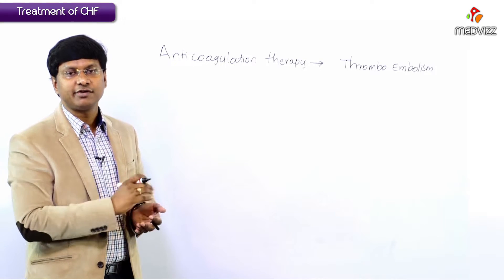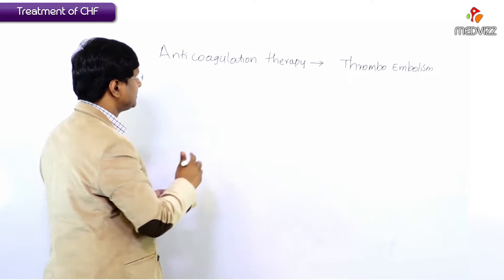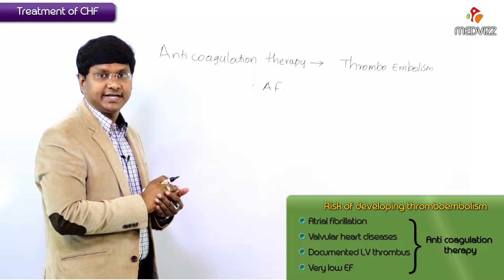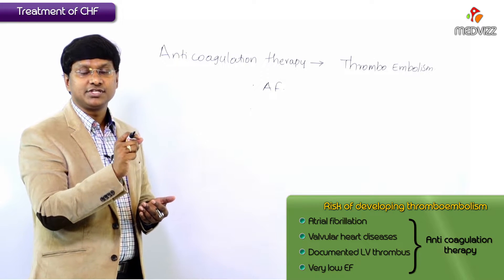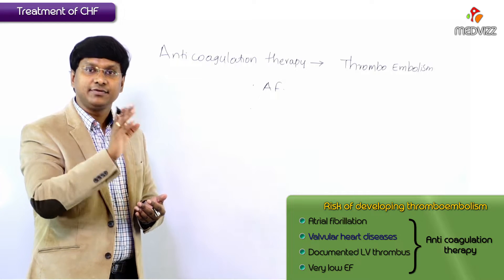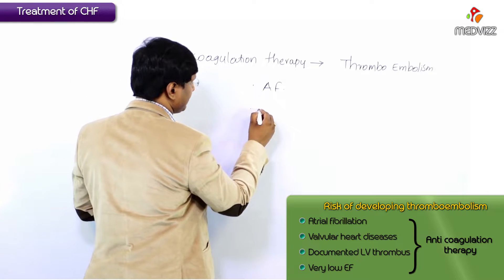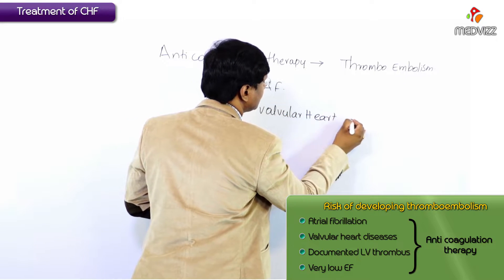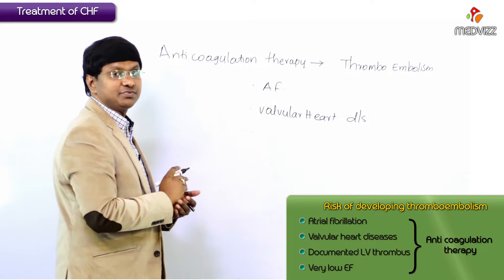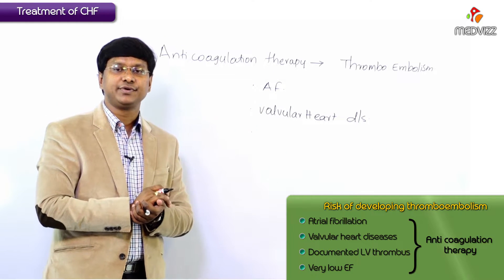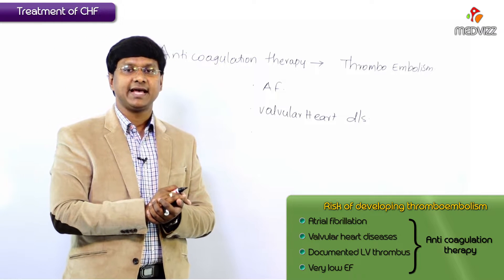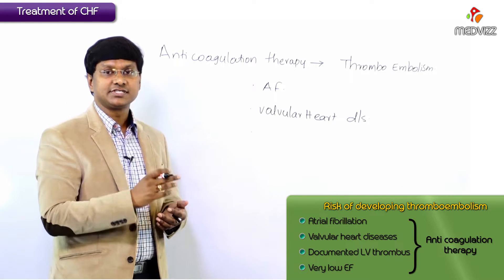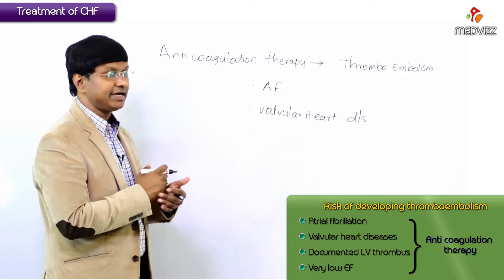Those individuals who are having atrial fibrillation need to be given anti-coagulation therapy. Also, those individuals with heart failure due to valvular heart diseases need anti-coagulation, because valvular heart diseases — for example, severe mitral stenosis, or mitral stenosis associated with mitral regurgitation — carry a risk of developing thromboembolism.